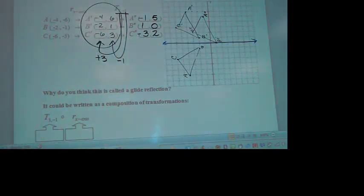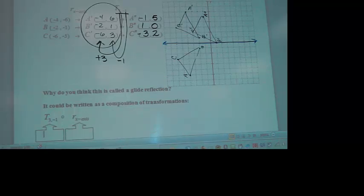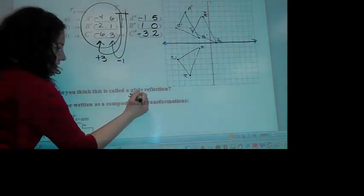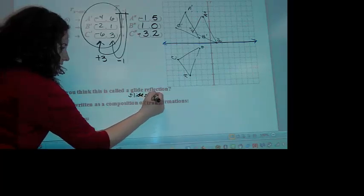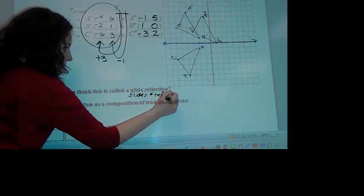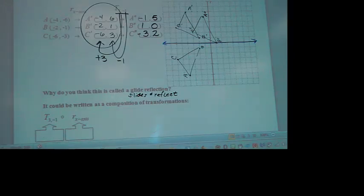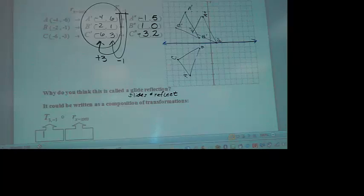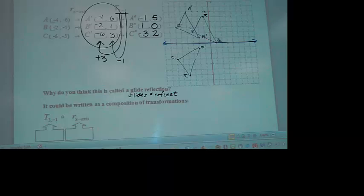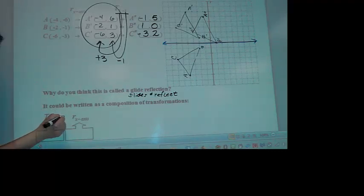Why do you think it's called a glide reflection? It does both. You got it. It slides and reflects. And it doesn't matter what order it's in. It could also reflect and then slide. Now, is this the first time you've ever seen a composition with this open circle? It's something that's going to carry through through trig, and if you go into college algebra, either one of those courses that you might go to next.